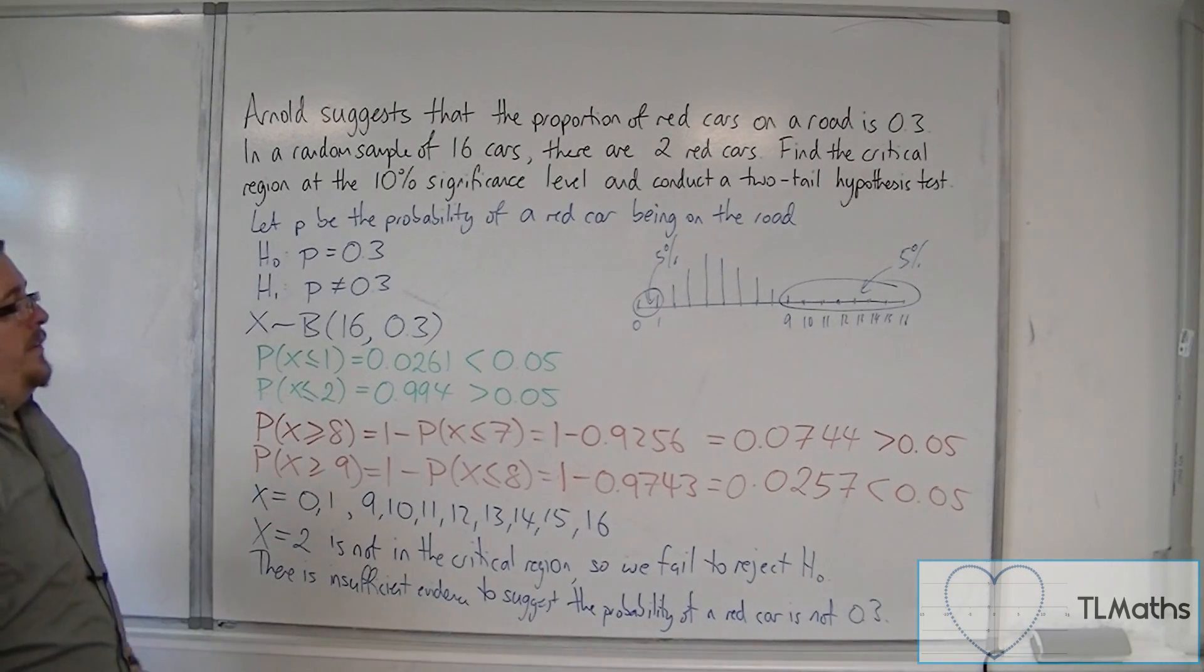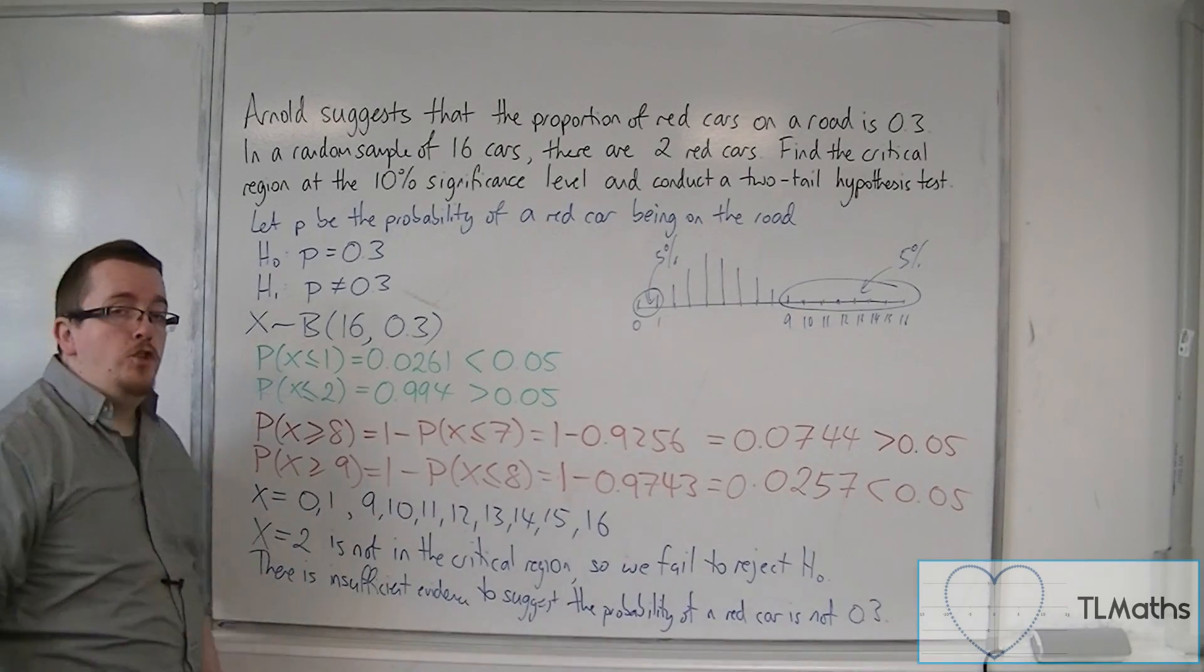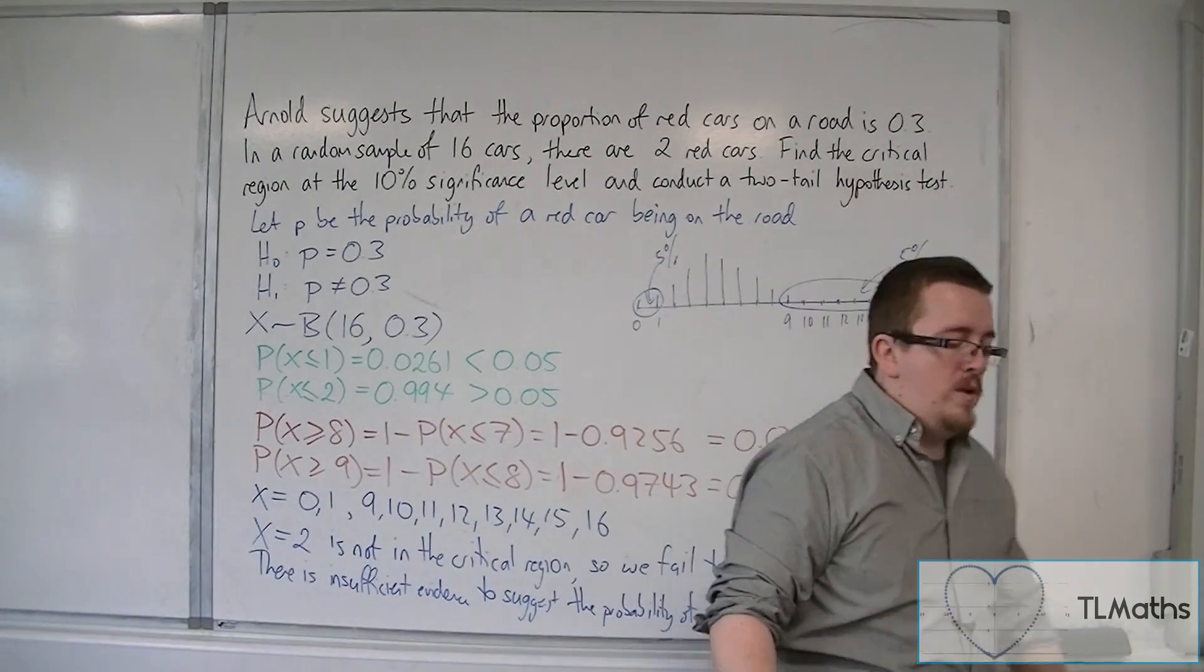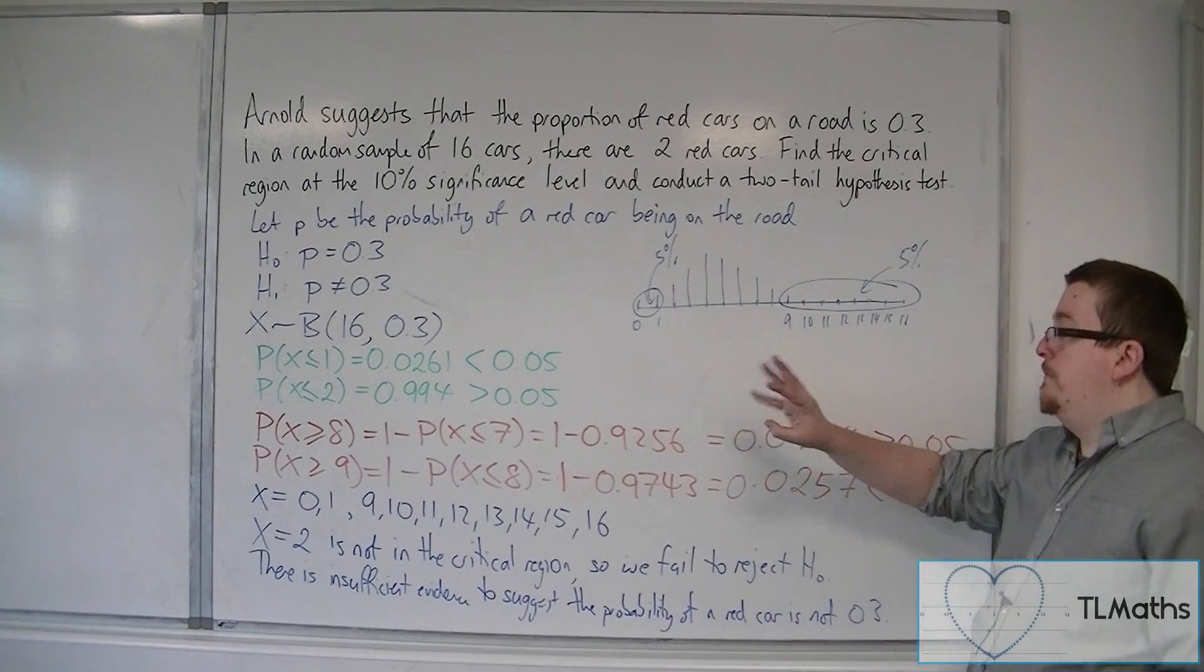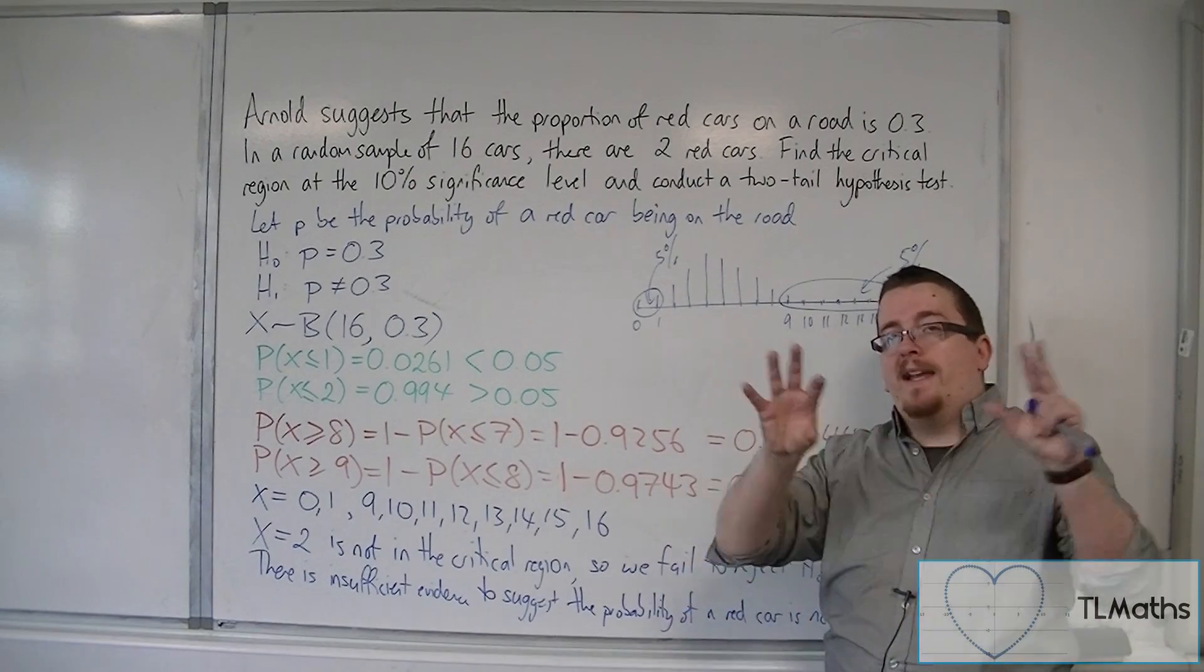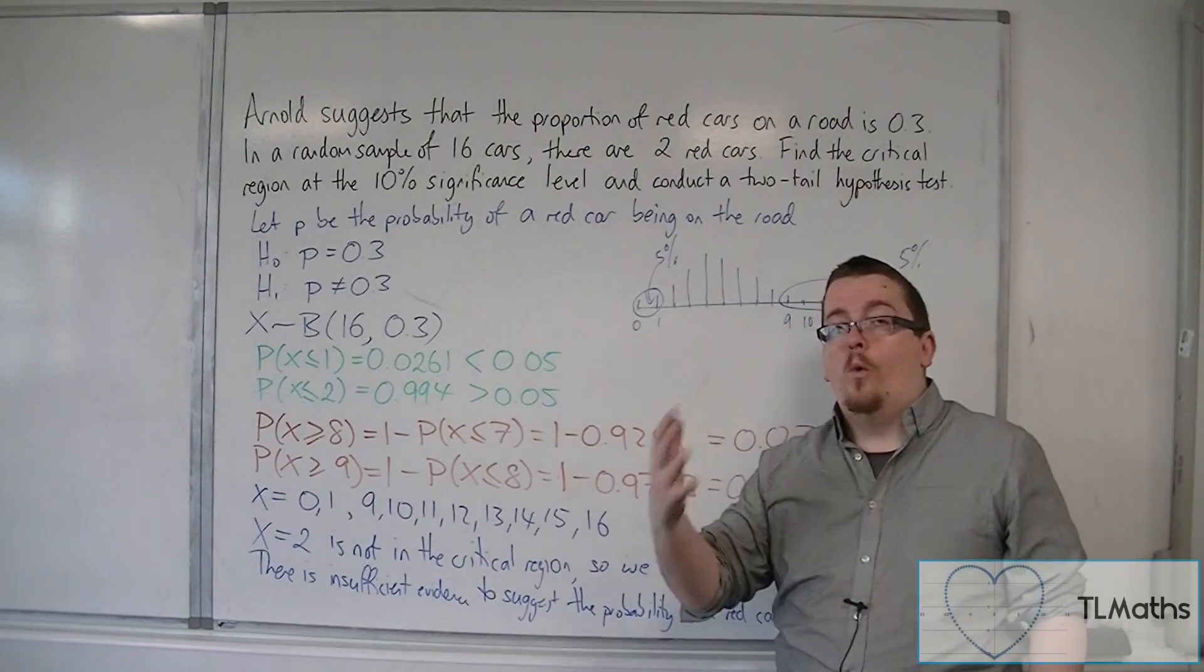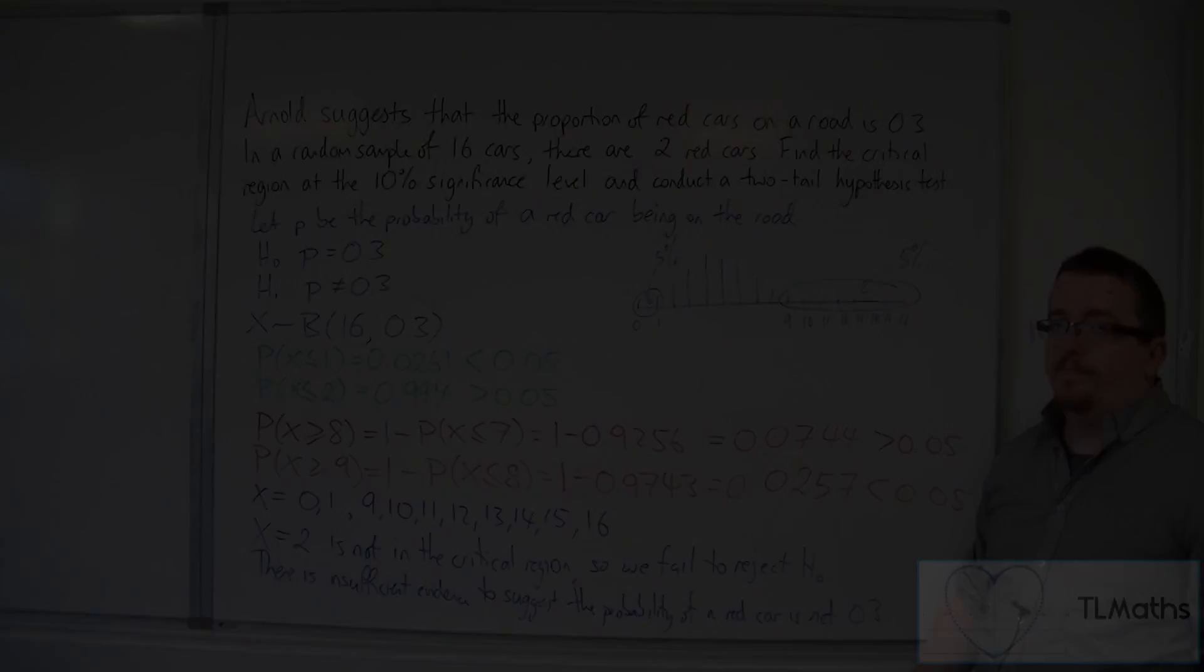So, this is us conducting a two-tailed test using the critical region method approach. It can be a little bit long-winded. It's certainly more long-winded than the previous method that I showed. But you may prefer this because in some ways, it does make a little bit more sense of how you're looking at both ends of the distribution rather than just comparing a probability to one end.